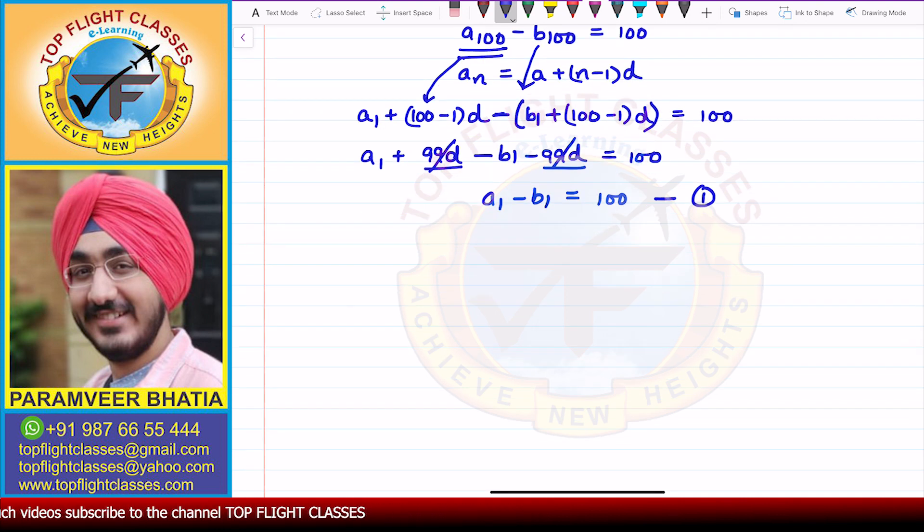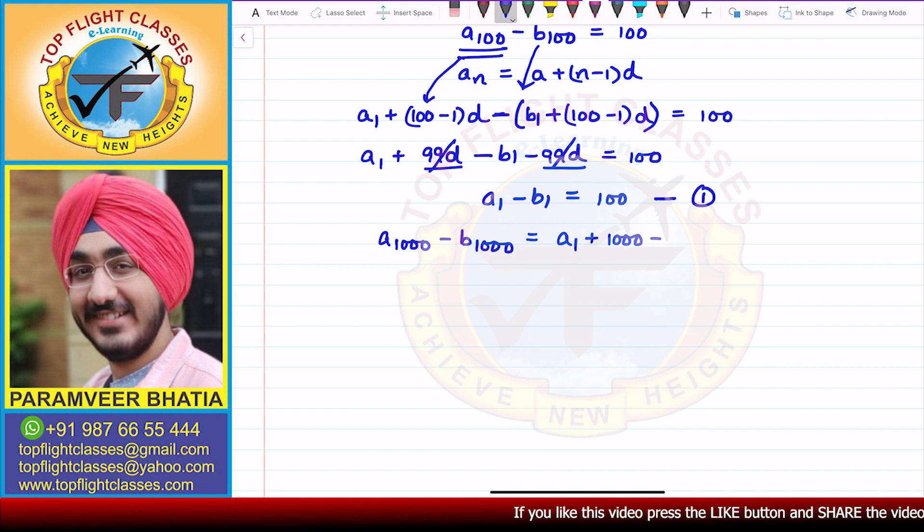Now he says that we have to find the difference between the 1000th terms. So A1000 minus B1000. This is what we have to find. So if we write the Nth term formula, I will get A1, that is the first term, plus N, N is 1000 in this case, minus 1 times D.